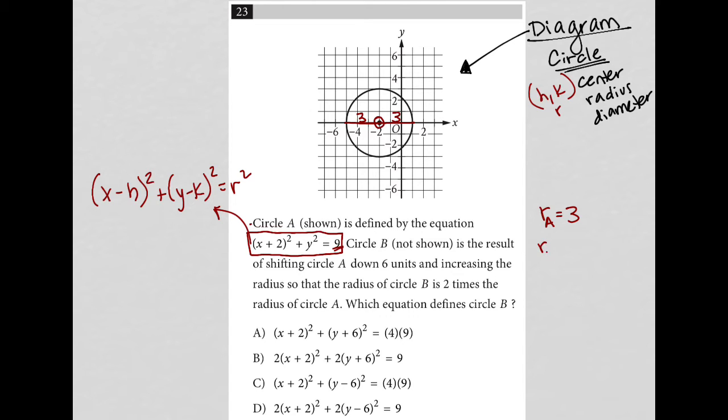We're also going from a center, h comma k, that is negative 2, 0 for circle A.